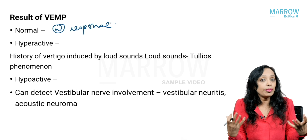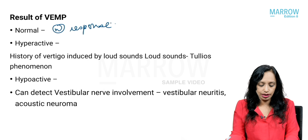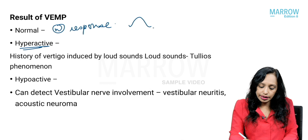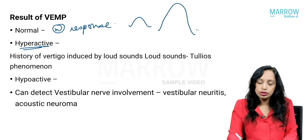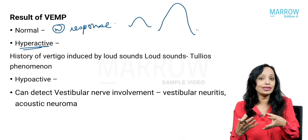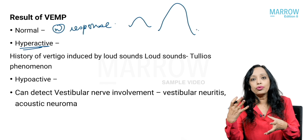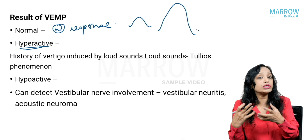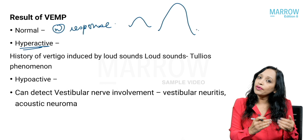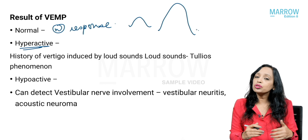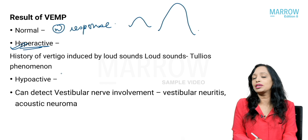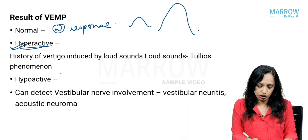The startling and relaxation of sternocleidomastoid will be present in normal individuals. However, if it is a hyperactive response — the amplitude is much higher than normal, or the response is elicited at a lower threshold (e.g., at 85 dB instead of 110 dB) — that is a hyperactive response. A hyperactive VEMP response means the patient has one of these conditions: fistula, superior semicircular canal dehiscence, Meniere's disease, or hypermobile footplate.